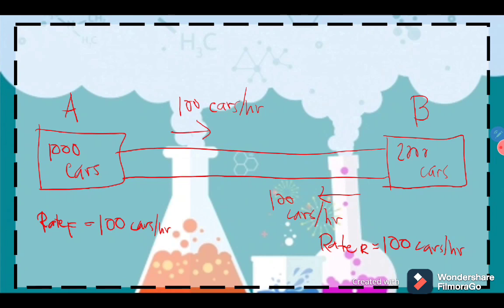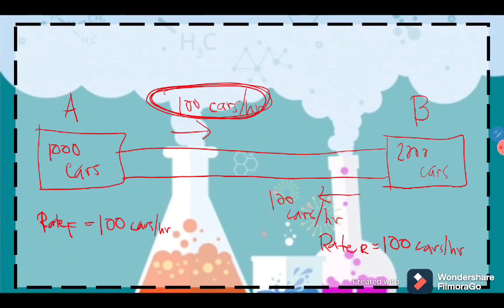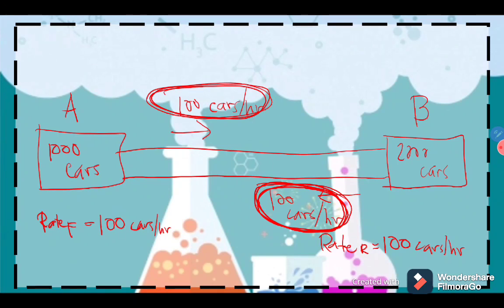Does the number of cars in each city change? No, because in City A, if there are 100 cars leaving to City B per hour and it receives 100 cars from City B per hour, its number of cars remains constant — as it releases 100 cars per hour, it also receives 100 cars per hour.